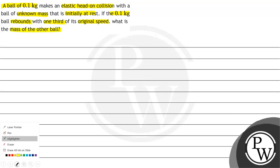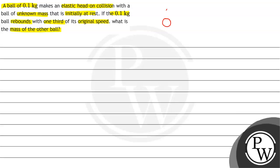So what do we have to find in the question? We are given two balls. Let us take ball 1 of mass 0.1 kg moving with velocity u, and there is a second ball, ball 2, whose mass is unknown — let's suppose m — and it has no velocity.